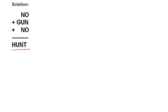The first thing we have to do is to write the question as: NO + GUN + NO = HUNT. As discussed in the previous lecture, in addition you first look at the leftmost digit of the result. Here we are adding a two-digit number, a three-digit number, and another two-digit number, and the result is a four-digit number. So H can only be 1 — there is no other possibility. H = 1, and once you get any value, put it aside so you don't assign it to any other alphabet.